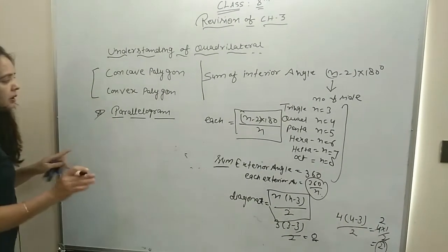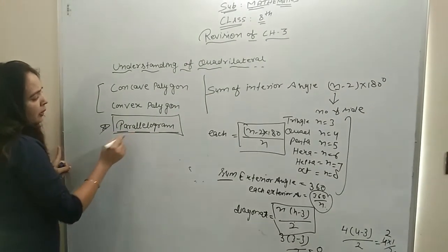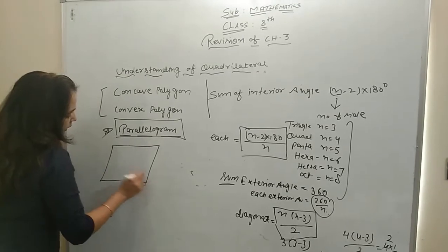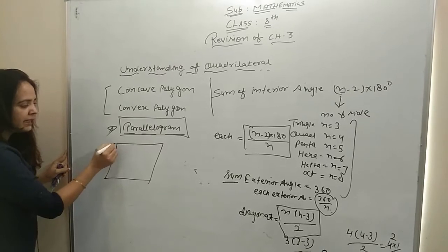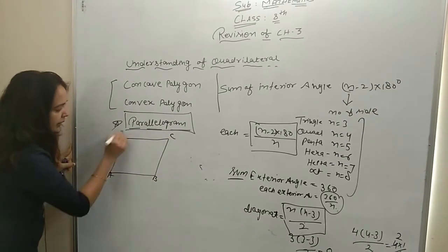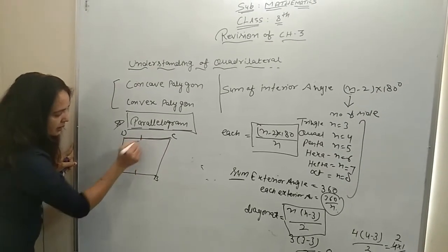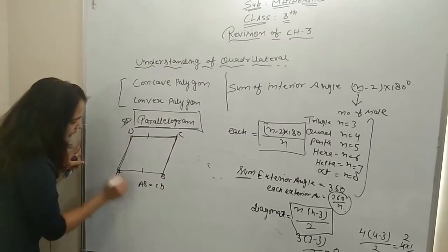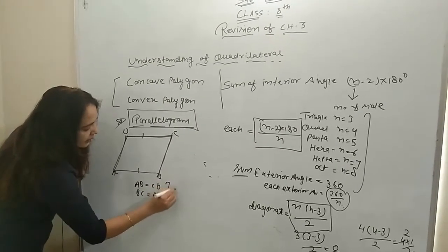The whole chapter is based on the parallelogram. Let me write the properties of what a parallelogram is. So this is your parallelogram. First property — by figure you can easily find it. What is given? The first property of parallelogram is that AB equals CD, which means opposite sides are equal. AB is equal to CD, and BC is equal to AD.